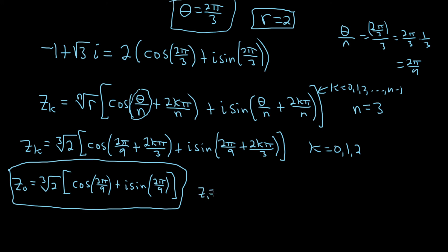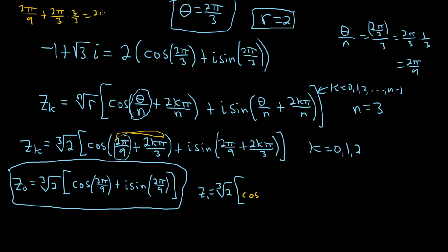For z sub 1, k equals 1. We take 2 pi over 9 and add 2 pi over 3. Converting 2 pi over 3 to ninths gives 6 pi over 9, so 2 pi over 9 plus 6 pi over 9 equals 8 pi over 9. Therefore z sub 1 equals cube root of 2 times bracket cosine of 8 pi over 9 plus i sine of 8 pi over 9. These problems take a long time, so that's the second root.